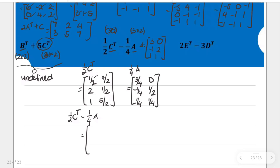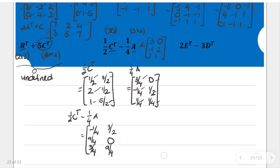One half minus 3 fourths is negative 1 fourth. Three halves minus 0 is still 3 halves. 2 minus negative 1 fourth — since minus negative becomes plus — that's 9 fourths. One half minus one half is 0. 1 minus 1 fourth is 3 fourths. Five halves minus 1 fourth: five halves in terms of fourths is 10 fourths, minus 1 fourth gives 9 fourths. This is the result for the fifth item.